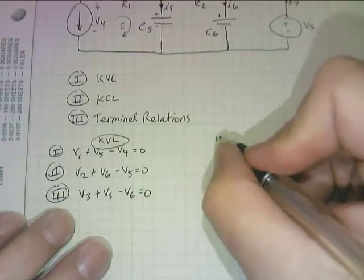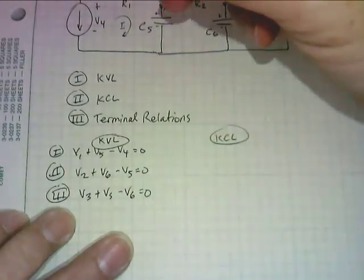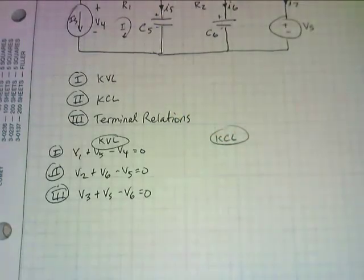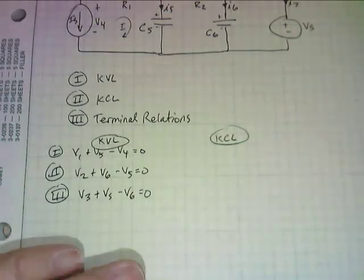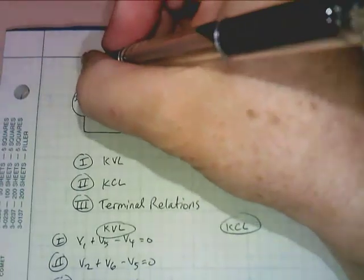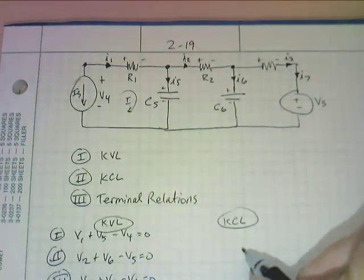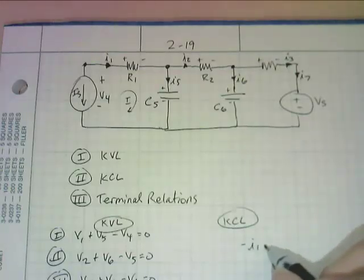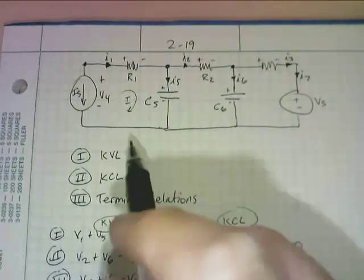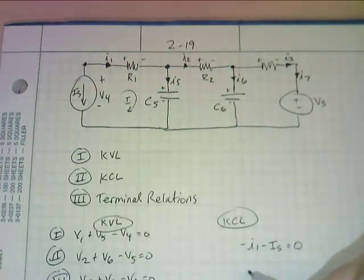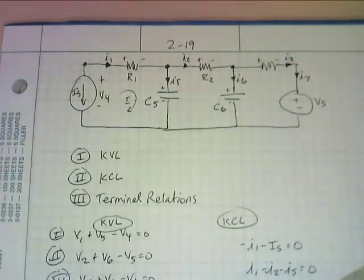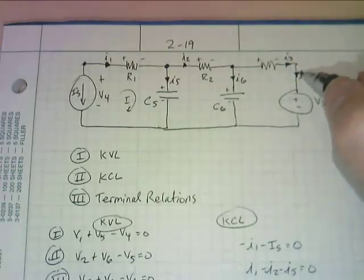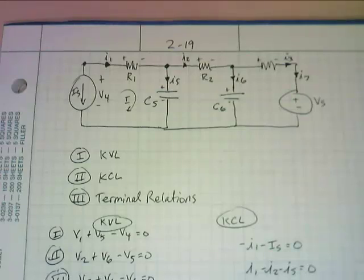Now let's do the Kirchhoff's current laws. We have IS right here — that's the current source direction as stated in the problem. There's a trivial node right here, and at that trivial node we have minus I1 minus IS because they're both leaving it. At the next node we have I1 entering and I2 and I5 leaving. At the following node we have I2 entering and I3 and I6 leaving. And there's another trivial node: I3 minus I7 equals zero.